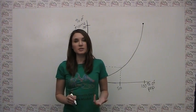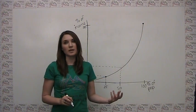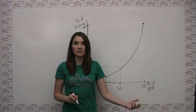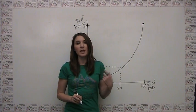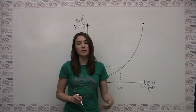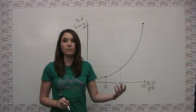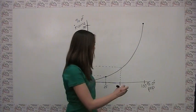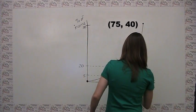We could continue this logic and say, again hypothetically, that if the bottom 75% of the population makes 40% of the income, then the point 75-40 will be on our Lorenz curve, and that would be somewhere out here.